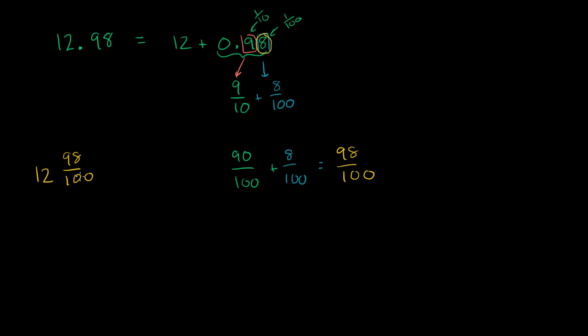98 is divisible by 2 and so is 100. So let's divide both of them by 2. They have that common factor. And so this is the same thing as 12 and 98 divided by 2 is 49. 100 divided by 2 is 50.